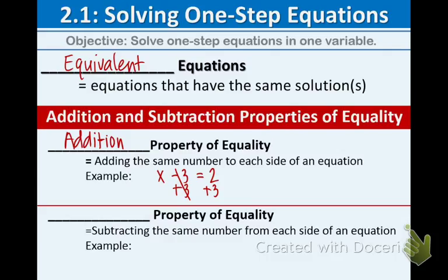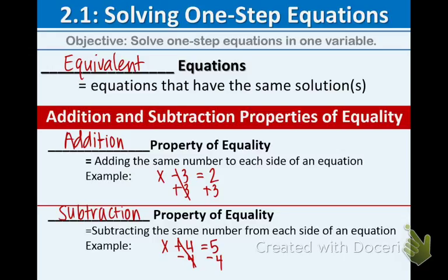The opposite of the addition property is the subtraction property. In the subtraction property of equality, you subtract the same number from each side of the equation. For example, x plus four equals five — to get x by itself and get rid of that positive four, we subtract four from both sides. Minus four, minus four — those go away, and now x is by itself.